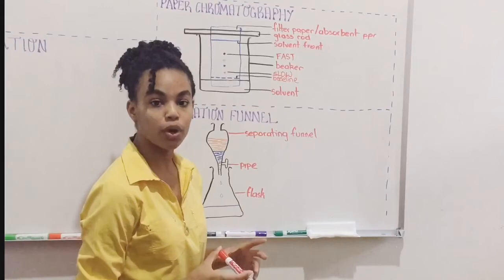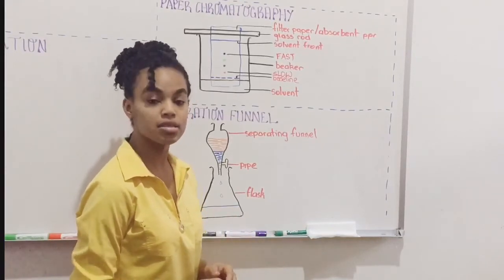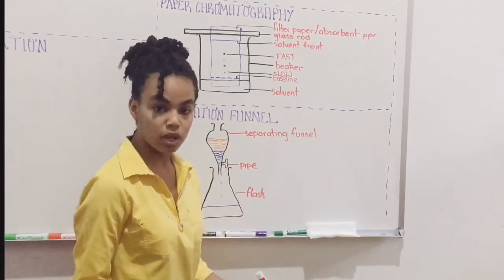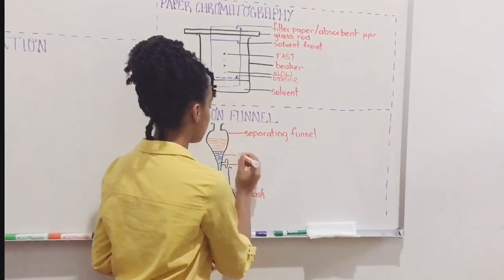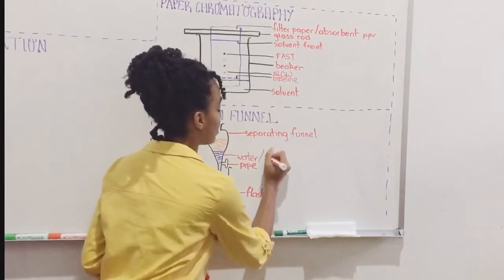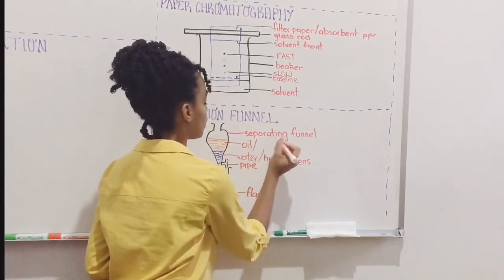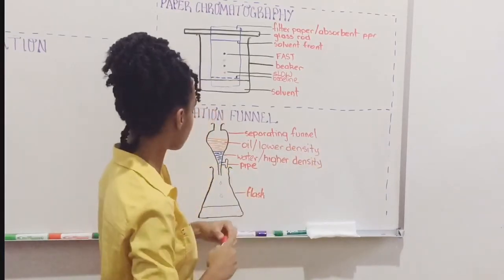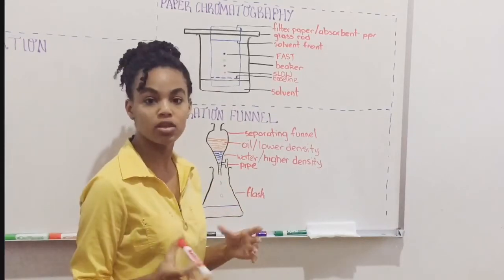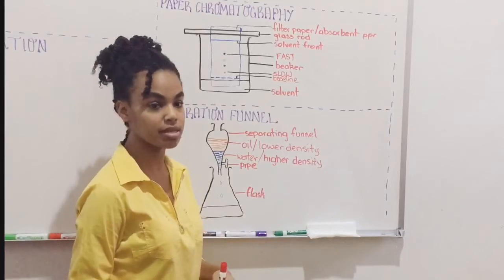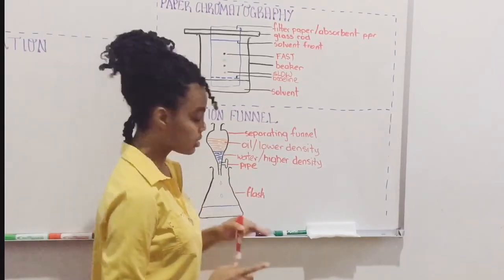In the separating funnel, you're going to pour your mixture of the two immiscible liquids. What you'll notice is that the liquid with the higher density settles to the bottom and the liquid with the lower density settles at the top. For example, oil and water — if you have a mixture of oil and water, you would have water settling at the bottom of the separating funnel. So we can call this water, or the one with the higher density. And we can call this oil, or the liquid with the lower density. As soon as those two liquids separate and find their level in the separating funnel, you're going to turn the tap on and allow the liquid with the higher density to drip into the flask.